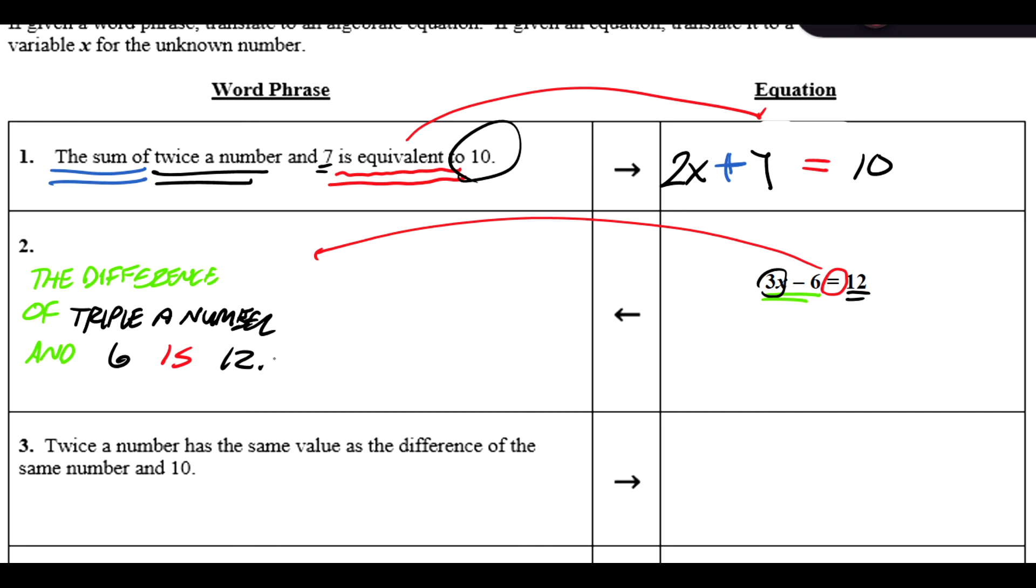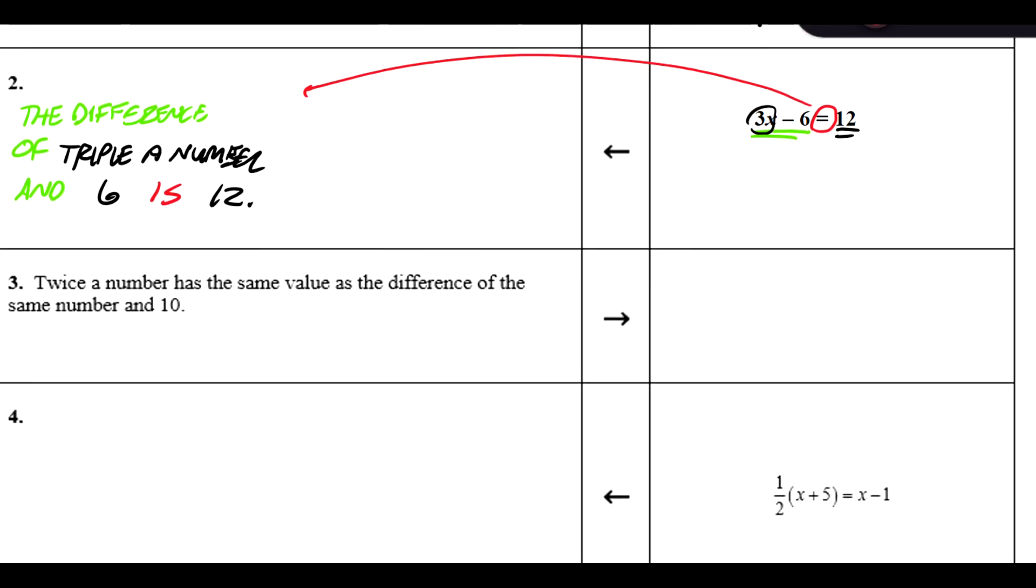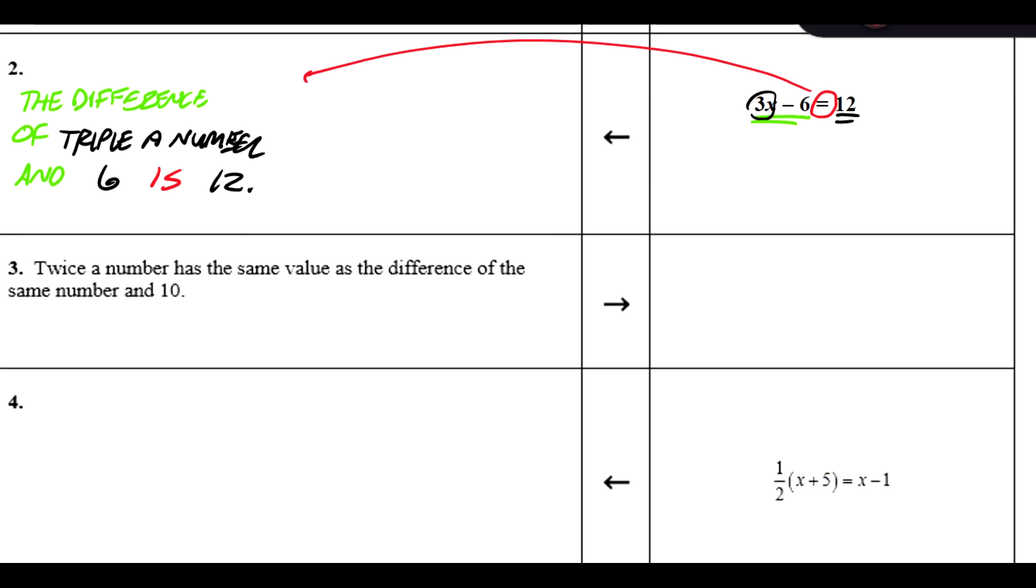So again, I'm kind of doing the same thing back and forth when I translate. Here's an English phrase: it says twice a number has the same value as the difference of the same number and 10. So again, I'm looking for that signifying the equal sign. Has the same value as would signify the equal sign.